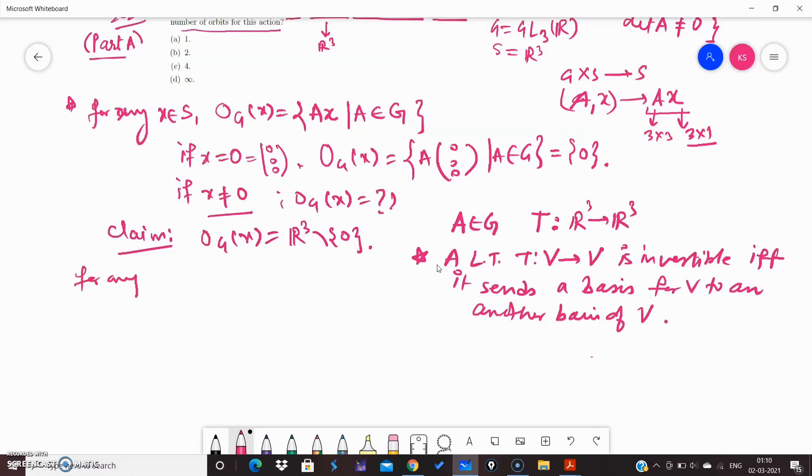For any X, Y belonging to S, we can always find an invertible matrix A which maps X to Y. How come? If B₁ and B₂ are two bases of R³, where X belongs to B₁ means X is a member of basis B₁ and Y is a member of basis B₂.